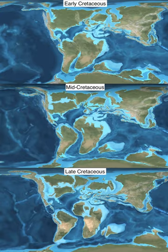During the Cretaceous, the late Paleozoic to early Mesozoic supercontinent of Pangaea completed its tectonic breakup into the present-day continents, although their positions were substantially different at the time. As the Atlantic Ocean widened, the convergent margin mountain building that had begun during the Jurassic continued in the North American Cordillera, as the Nevadan orogeny was followed by the Sevier and Laramide orogenies. Though Gondwana was still intact in the beginning of the Cretaceous, it broke up as South America, Antarctica and Australia rifted away from Africa, though India and Madagascar remained attached to each other; thus, the South Atlantic and Indian oceans were newly formed. Such active rifting lifted great undersea mountain chains along the rifts, raising eustatic sea levels worldwide.